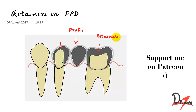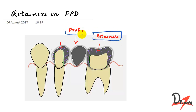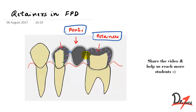Why are they called retainers? Because we wanted to place this artificial tooth here, and to do this, we had to prepare the teeth adjacent to it — meaning we cut the external surface of the teeth. When we prepared this, we placed a cap-like thing here. The retainer keeps this pontic in place, which is why they are called retainers. The retainer and the pontic are connected, and that connection is called the connector.